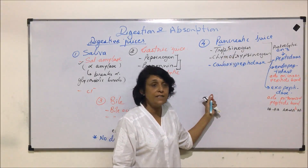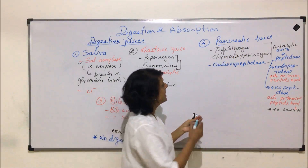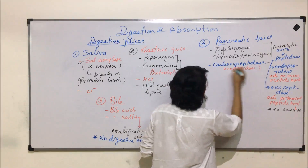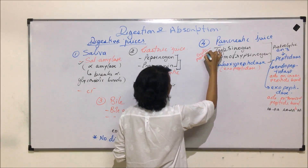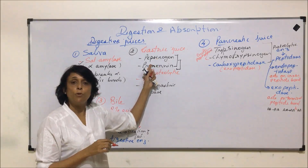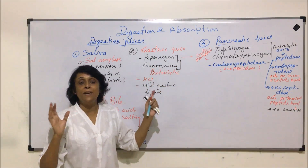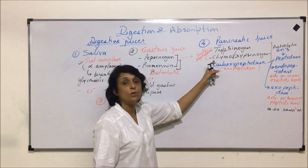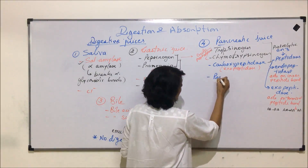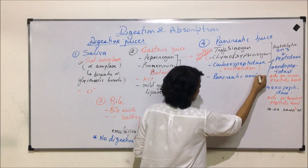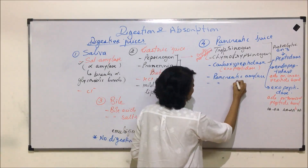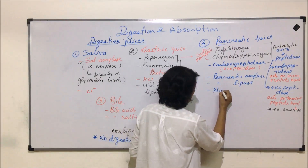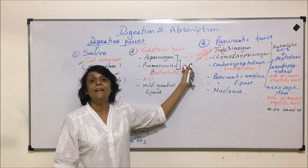Out of the pancreatic enzymes, trypsinogen and chymotrypsinogen are endopeptidases, while carboxypeptidase is an exopeptidase. Similarly, pepsinogen and pro-renin in gastric juice are endopeptidases — they break the larger protein or polypeptide chain into smaller chains. Pancreatic juice also contains pancreatic amylase, which is also an alpha amylase, pancreatic lipase, and nuclease, which acts on nucleic acids.